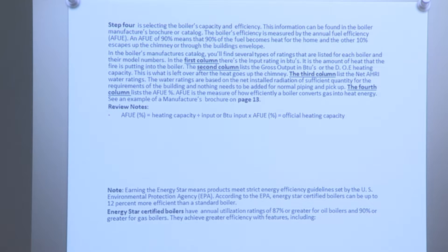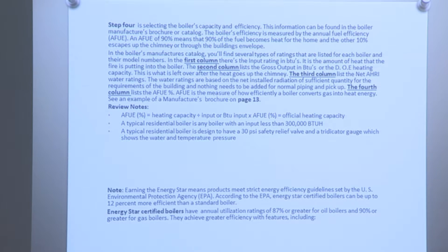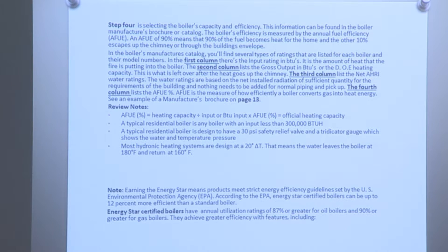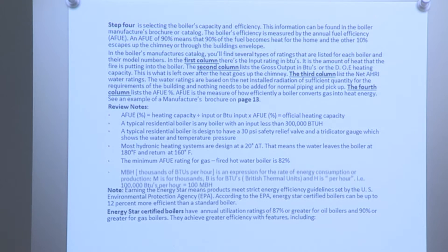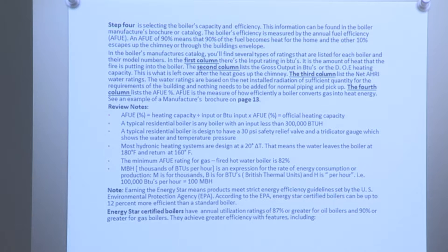AFUE percent equals heating capacity divided by BTU input; BTU input times AFUE percentage equals official heating capacity. A typical residential boiler has an input less than 300,000 BTUs. It is designed with a 30 PSI safety relief valve and a tri-dedicated gauge showing water temperature and pressure. Most hydronic heating systems are designed at a 20 degree delta T, meaning water leaves the boiler at 180°F and returns at 160°F. The minimum AFUE rating for gas-fired water boilers is 82%. MBH equals 1,000 BTUs per hour — M is for 1,000, B is BTU, H is per hour — so 100,000 BTUs per hour equals 100 MBH.